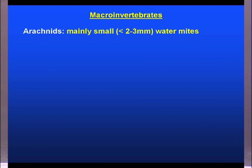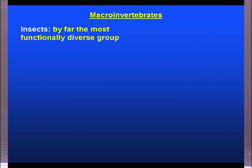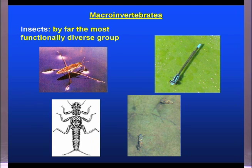Arachnids include the mites and the spiders. We do have some aquatic spiders, but for the most part the aquatic invertebrate component represented by arachnids are these very small mites — this picture is blown up many times to give you an indication of what they look like, but they're very very small. Lastly, insects are by far and away the most diverse functional group — they perform more different functions in the stream system than perhaps any other group. These include everything from water striders skipping across the surface, to dragonflies, to stoneflies, to caddisflies.